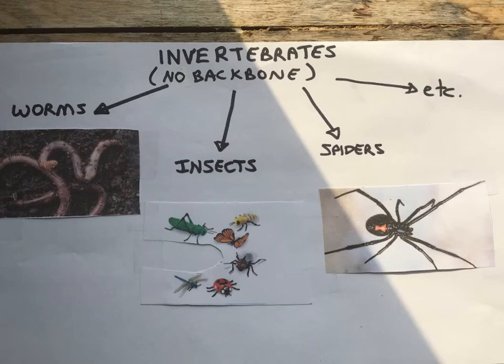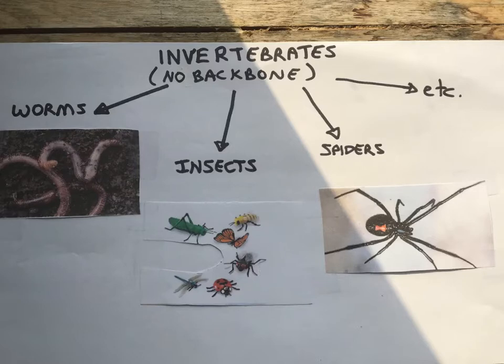Scientists classify all animals into two larger groups. The first are the invertebrates — the ones that don't have a backbone. These include things like worms and insects. Spiders are one of the largest groups of invertebrates, and there are a lot more that haven't been mentioned.